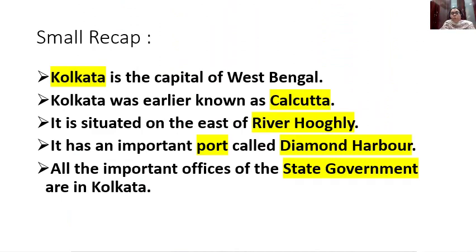Let's do a small recap of what we have learned in today's class: Kolkata is the capital of West Bengal. Kolkata was earlier known as Calcutta. It is situated on the east bank of River Hugli. It has an important port called Diamond Harbour. All the important offices of the state government are in Kolkata. In the next class, we will learn more about Kolkata. Thank you, children.